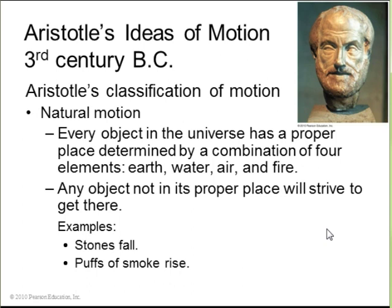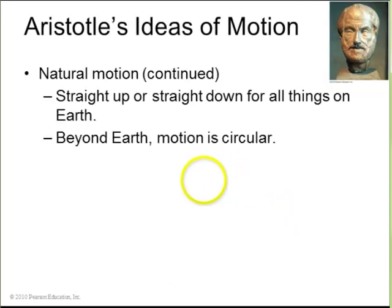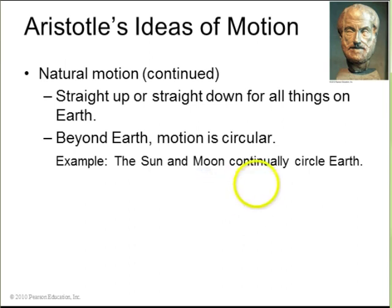Another thing that Aristotle taught was that a heavier object, since they're made of more stuff, should strive harder to get to where they're going. So the heavier an object, the faster it should fall. Beyond earth, motion is circular. So the sun and the moon continually circle the earth.